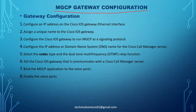So let's start with the MGCP gateway configuration. These are normally eight steps which we need to do for the MGCP configuration. The first step would be to configure an IP address on the Cisco IOS gateway Ethernet interface. On the Ethernet interface, you need to give an IP address. I will show you how we can assign the IP address to that particular gateway Ethernet interface.